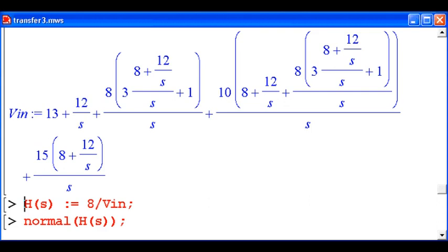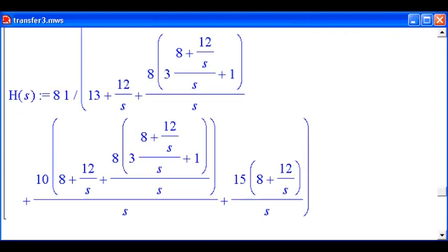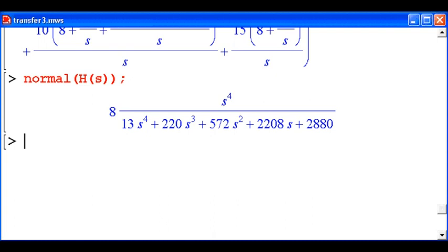And eventually we get that massive interleaved expression there for VN. We do the transfer function as the assumed voltage, 8, divided by the input voltage that we found, VN. And just do the Maple normalize function to put it in a standard format. And we end up with that result.